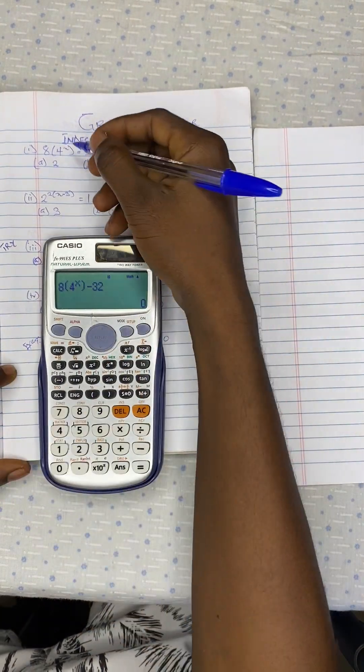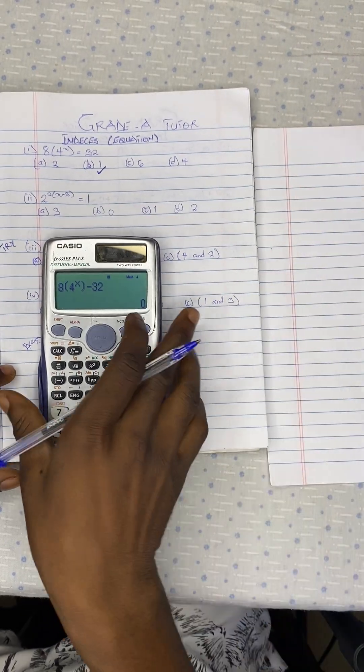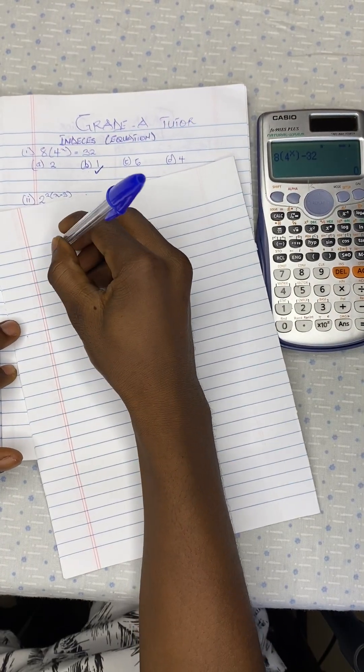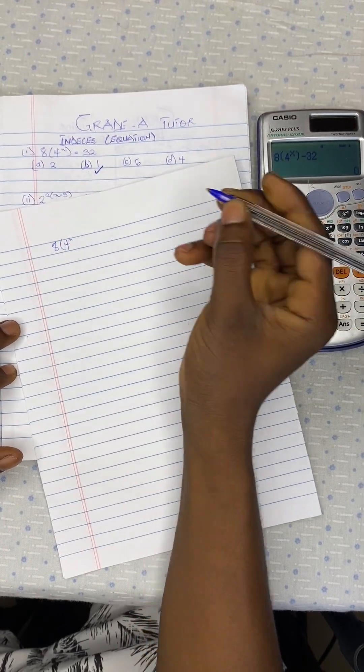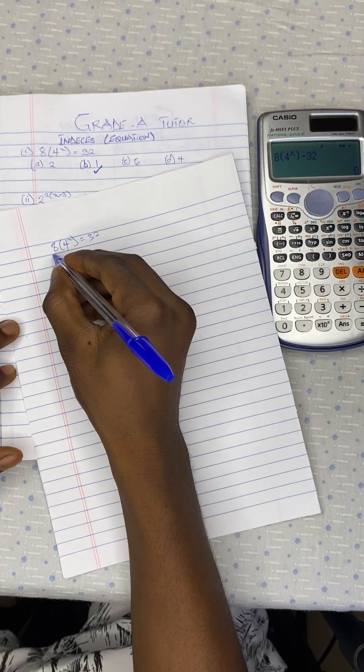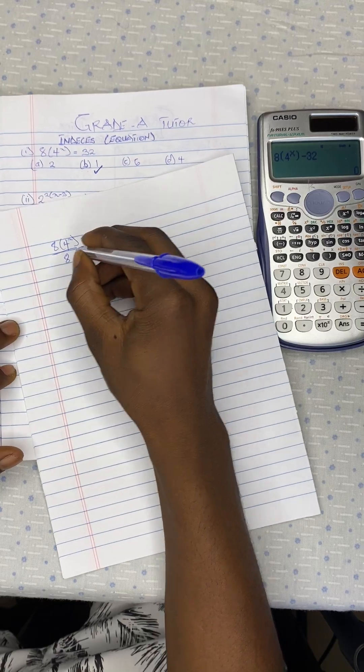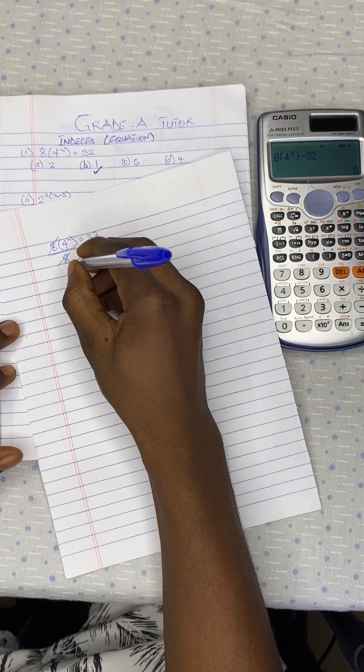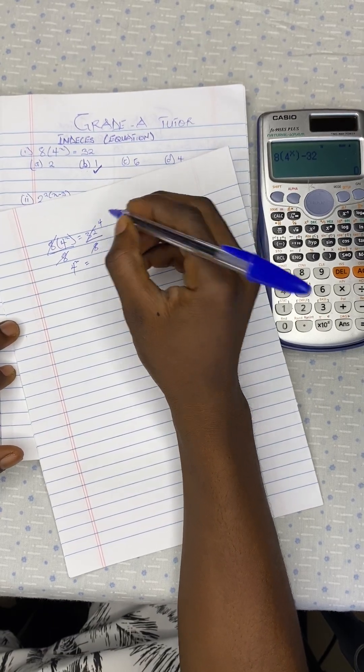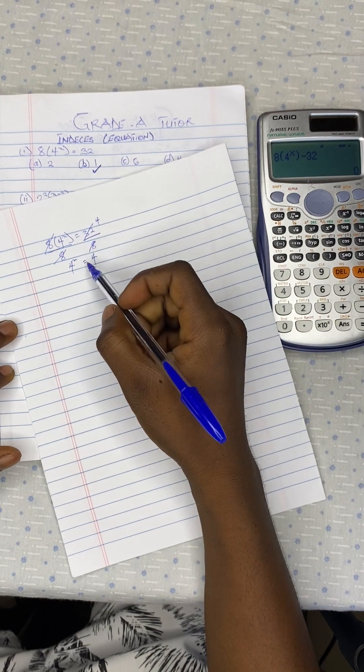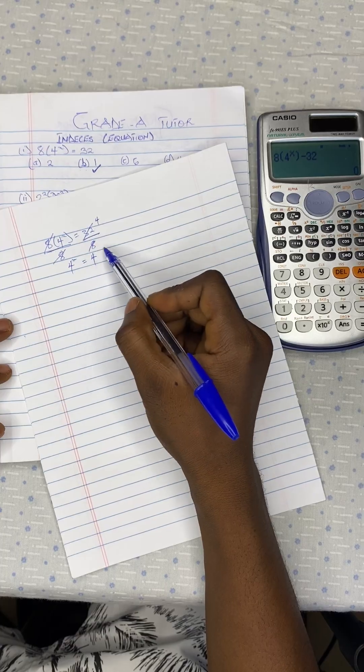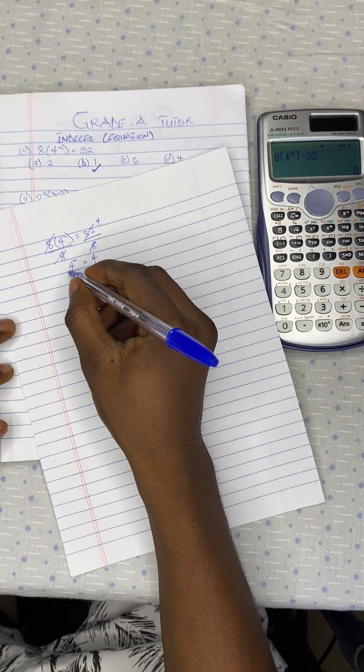Because if you have 8 into bracket 4 exponent x equal to 32, you divide here by 8. You divide here by 8. So you have 4 exponent x is equal to, now 8 goes into 32, 4 times. So you have 4. And with the law of indices, if the bases are the same, you equate the exponent.